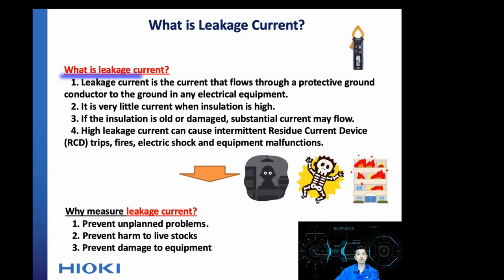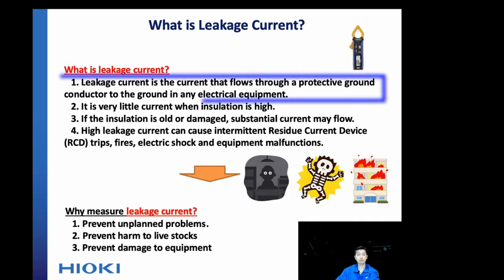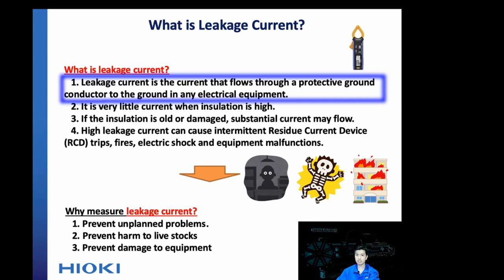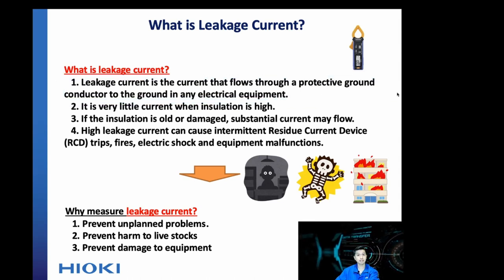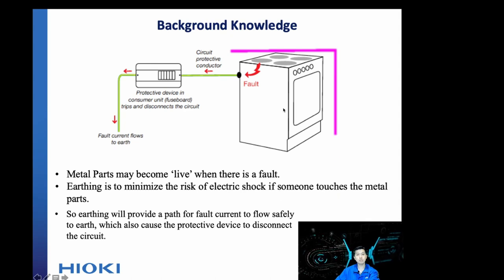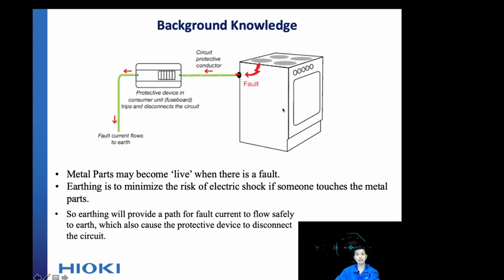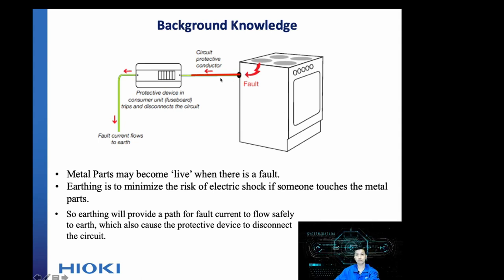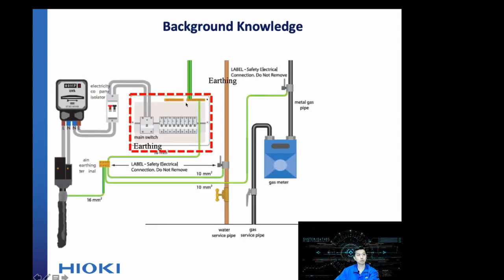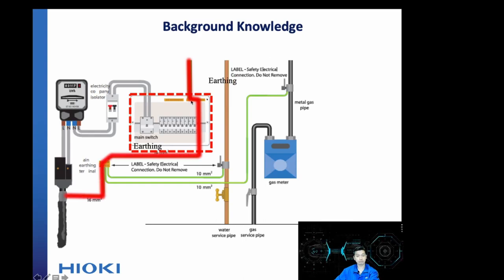Leakage current is the current that flows through a protective ground conductor to the ground in any electrical equipment. Assuming this is an electrical appliance, any kind of fault will cause the leakage current to flow to the protective ground conductor, to the main earth, and subsequently to the ground.